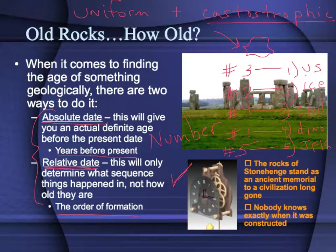Both of these have their purpose. You might say: obviously if you find absolute dates, you are finding relative dates — and that is true. But you cannot always find the absolute date of everything, so relative dating certainly is important and has its place.